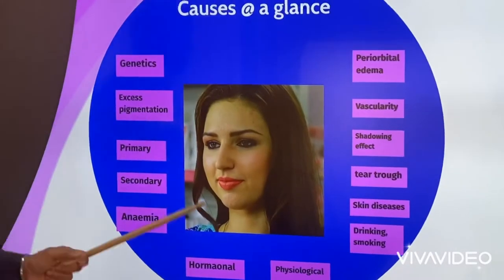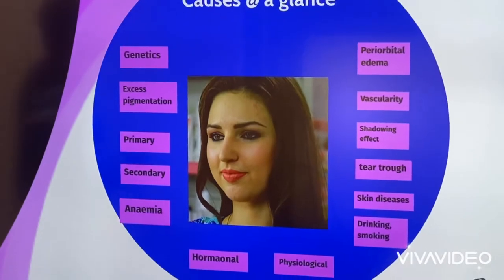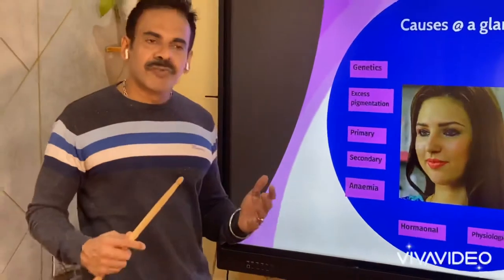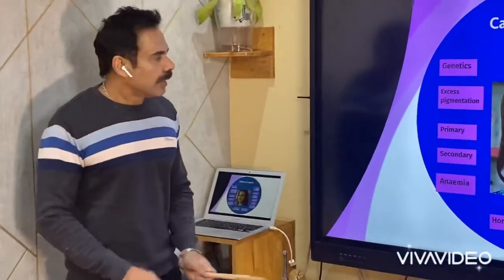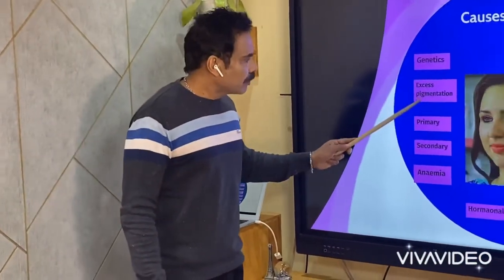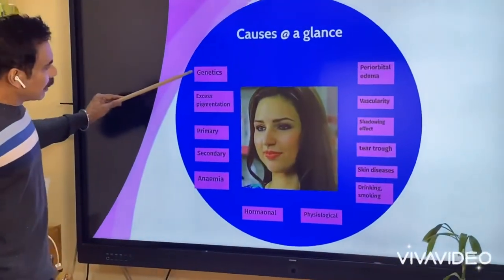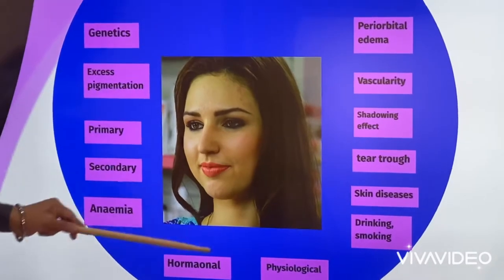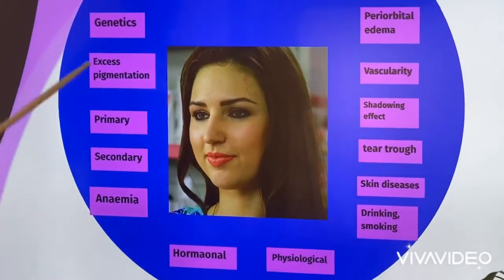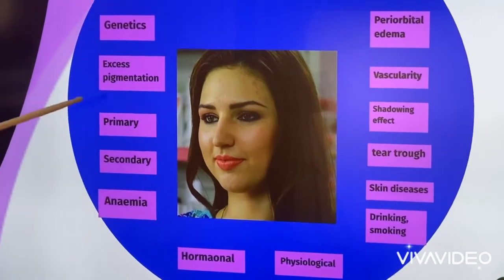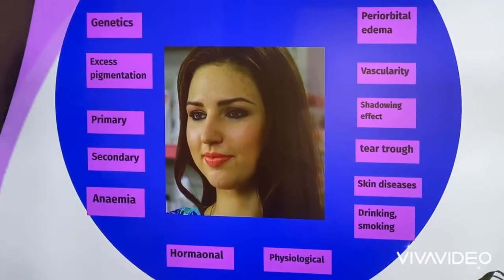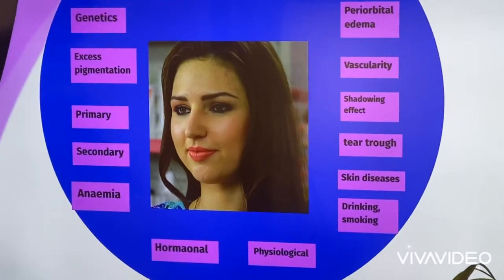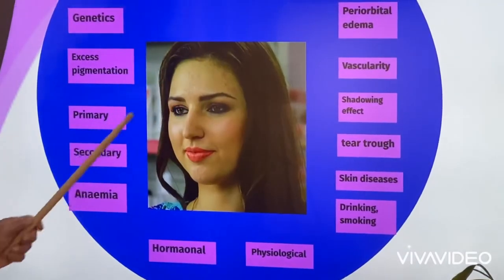Now the causes at a glance. The first cause is genetics - it runs in the family, starting from early childhood and increasing with age. The second main cause is excess pigmentation, which can be either primary or secondary. Everything comes under these main classifications.